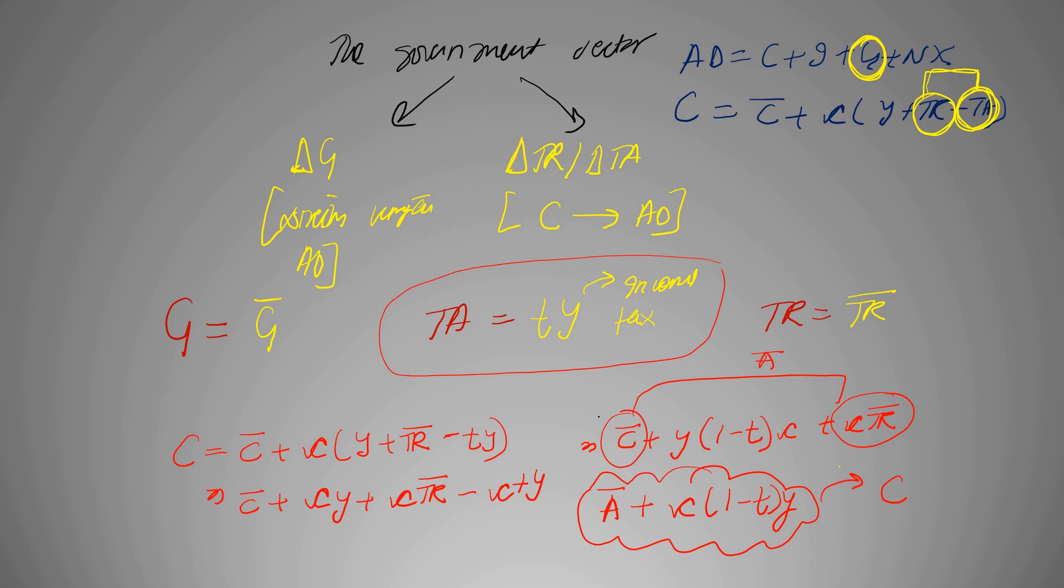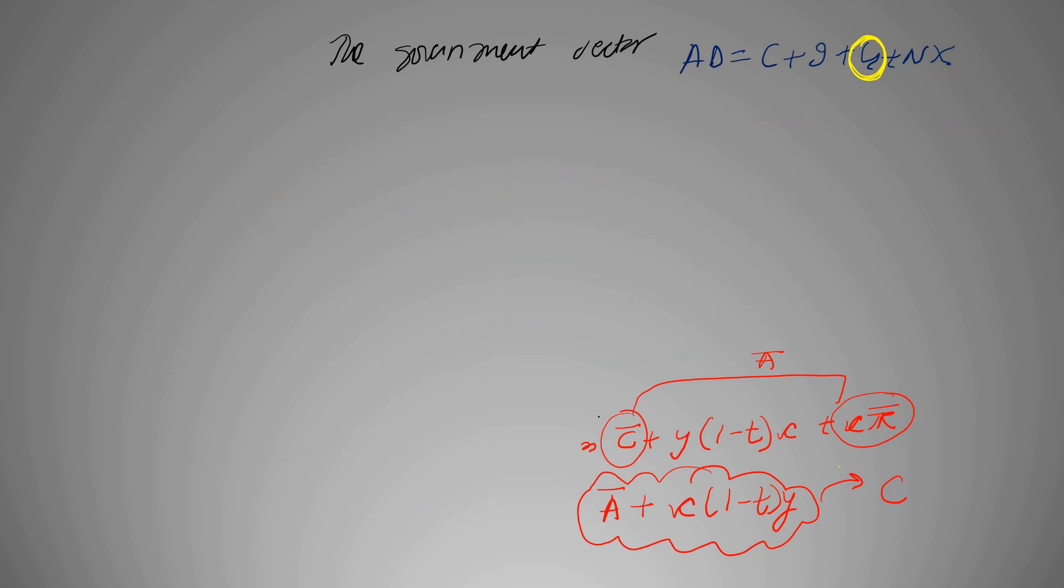Now let us see impact of the same in the AD equation. We know that AD is equal to C plus I plus G plus NX. We can assume G to be G bar, and the rest was over here, which was TR is equal to TR bar and TA was equal to TY.